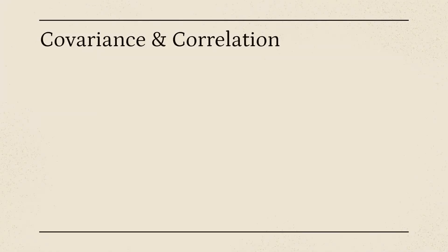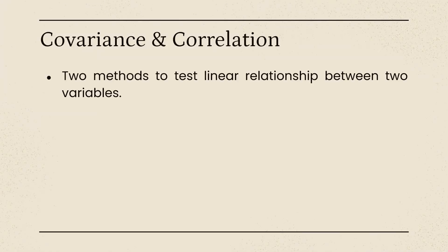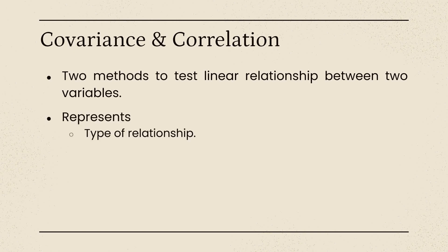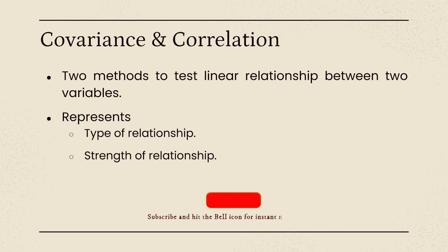These two measures are used to test the linear relationship between two variables. That means, by using these two measures, we can test whether the given two variables are having any linear relationship between them or not. Relationship measures represent two things: the first one is type of relationship and the second one is strength of the relationship.